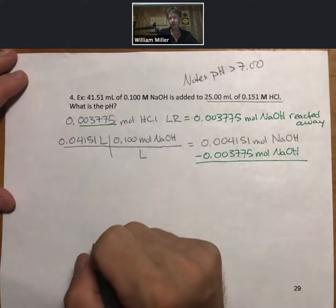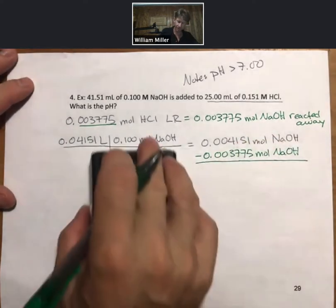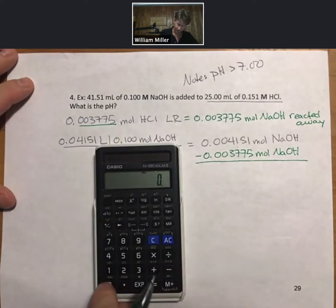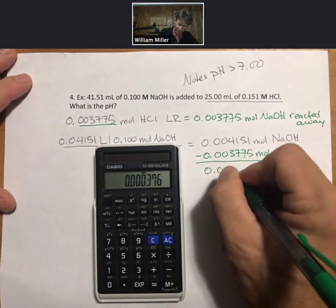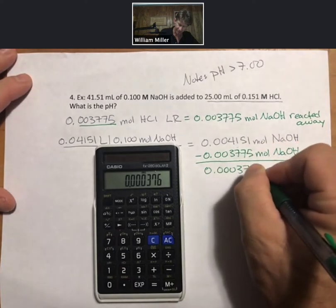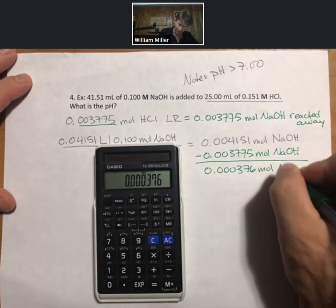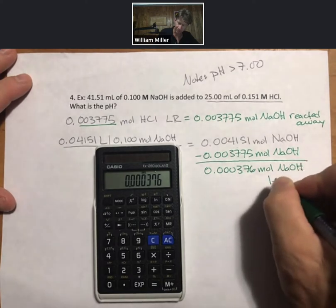Therefore if we know the starting sodium hydroxide moles and we know how many are reacted away, we can then find our moles left over. 0.000376 moles sodium hydroxide left over.